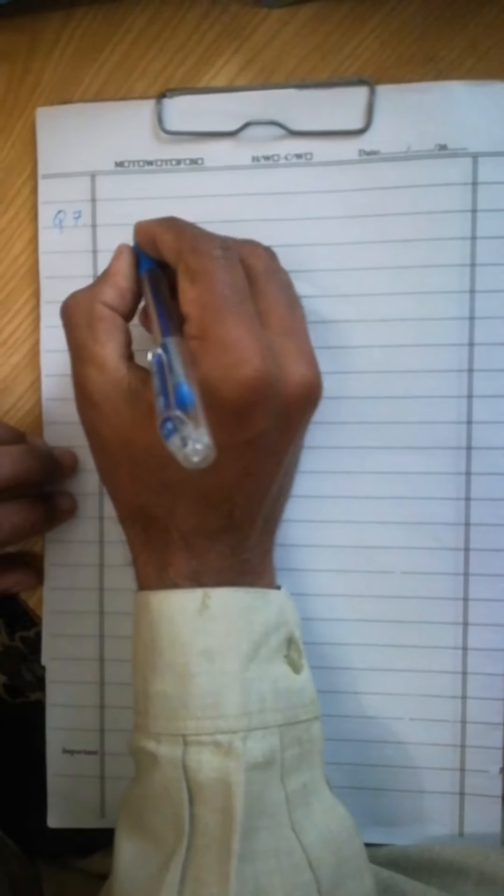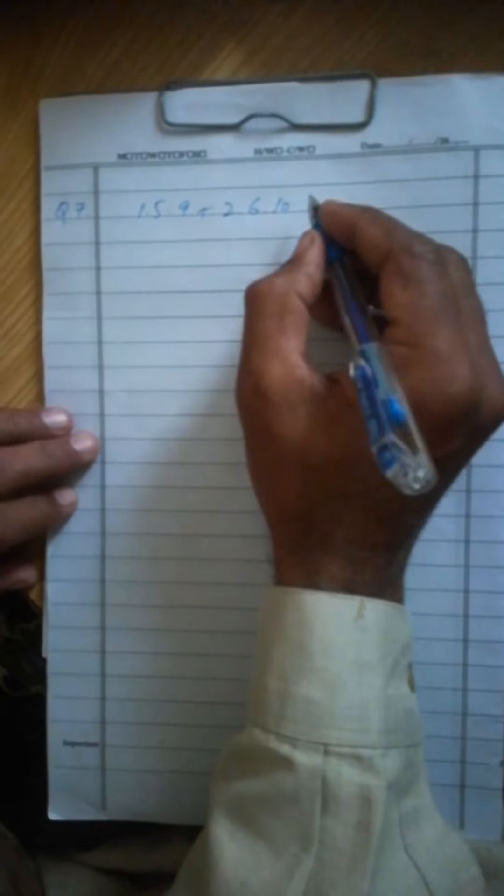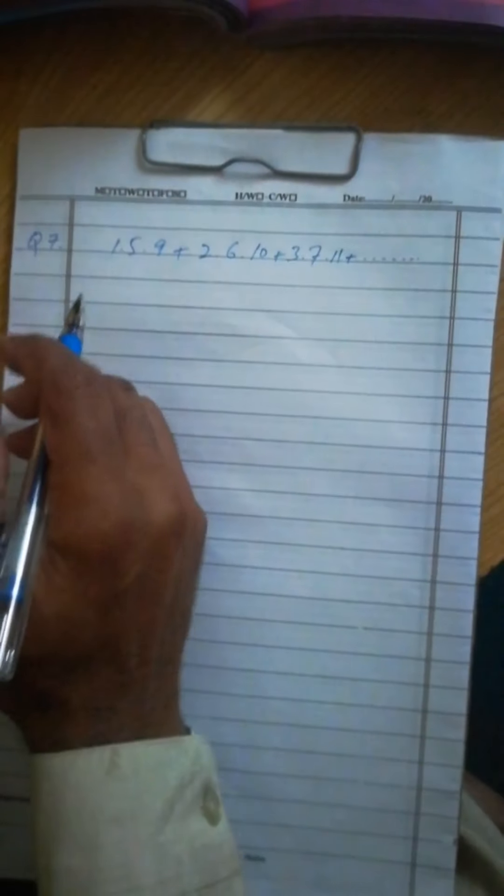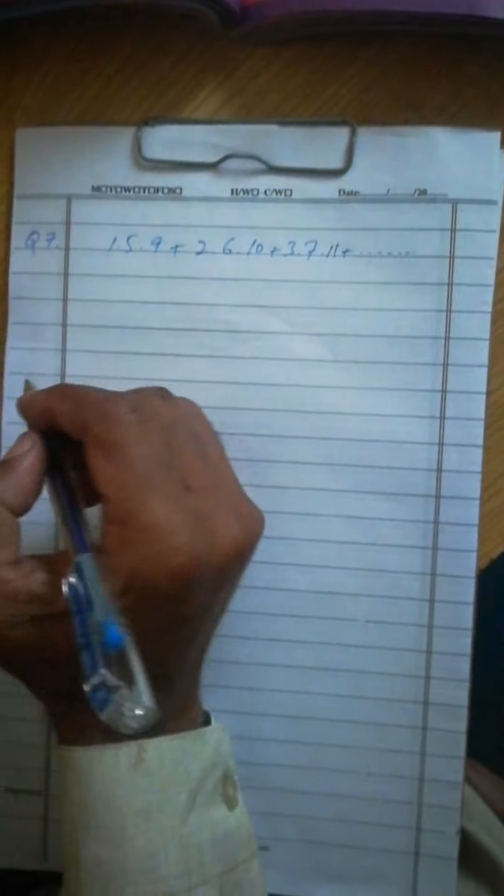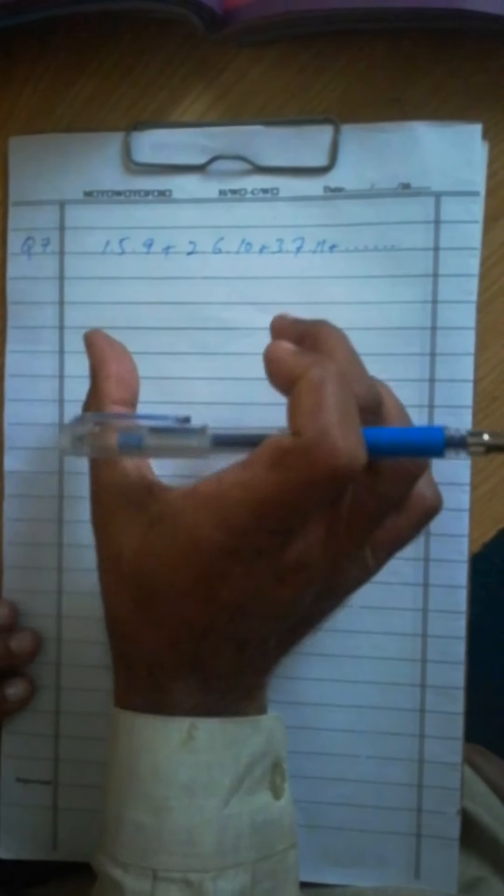Now we come to the next question. I am going to solve one more question and I select question 7. Sum the series: 1×5×9 plus 2×6×10 plus...